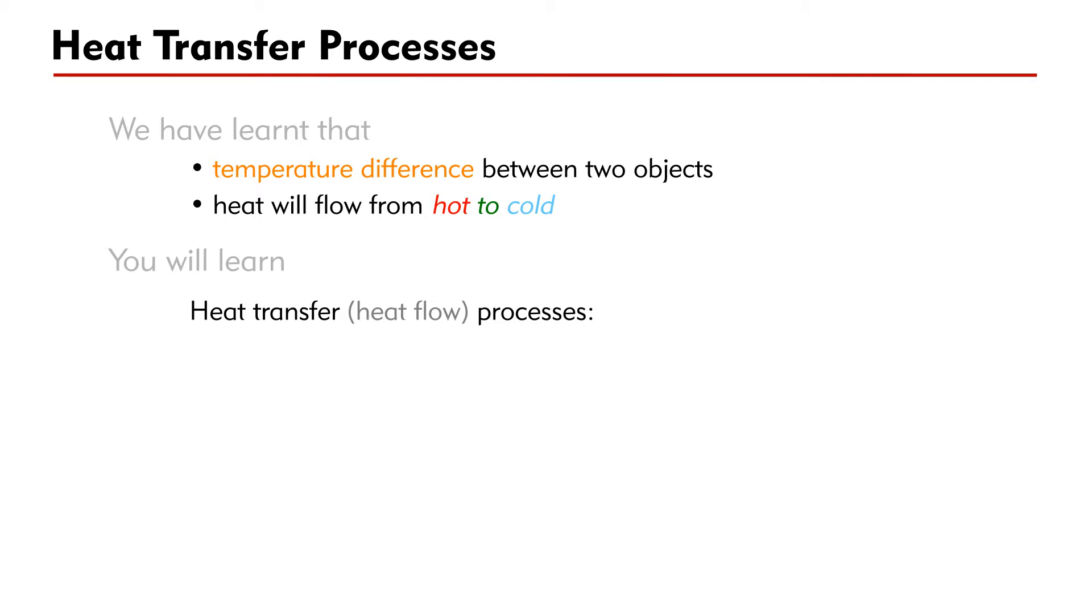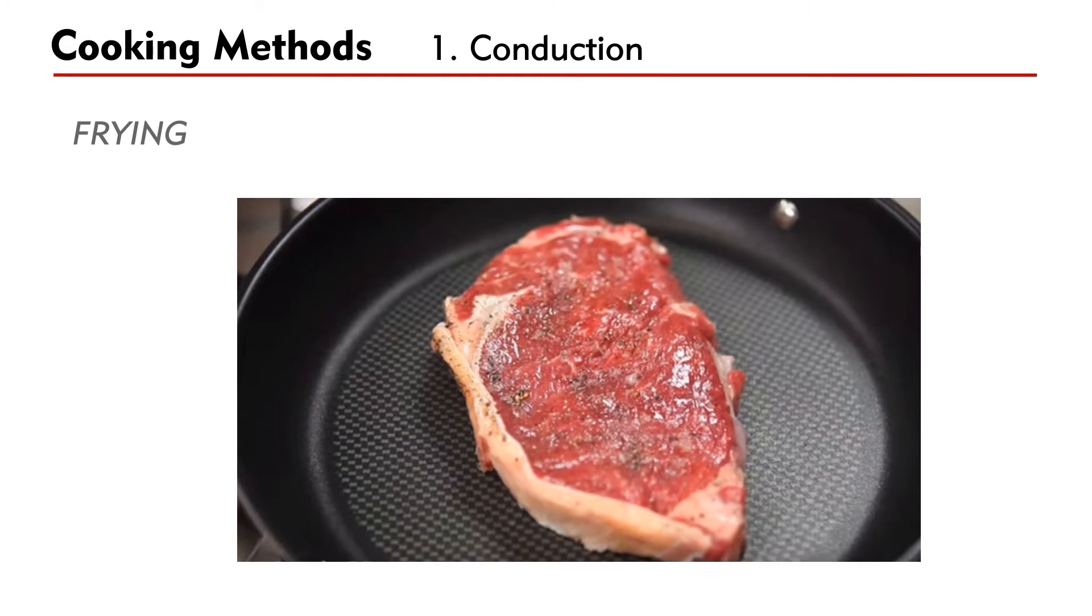Experiments show that there are three heat transfer processes: conduction, convection, and radiation. Let's look at some cooking methods.